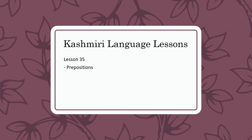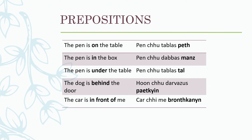Hi all, welcome back. We're learning Kashmiri language and today is lesson number 35. We'll talk about prepositions. The pen is on the table: pencho tablas pet. On is 'pet' in Kashmiri. The pen is in the box: pencho dabas manz. In means 'manz', and box is 'dabas'.